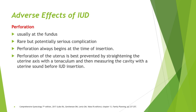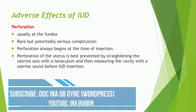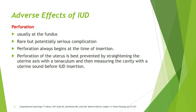A second possible adverse effect is perforation, which usually occurs at the fundal area. This is a rare but potentially serious complication, and perforation always begins at the time of insertion. Perforation is best prevented by straightening the uterine axis with a tenaculum and then measuring the cavity with a uterine sound before IUD insertion.